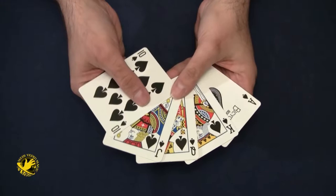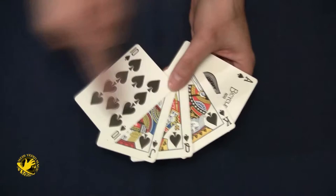If I wave my hand over the five cards, they turn into the best possible hand, a royal flush in spades.